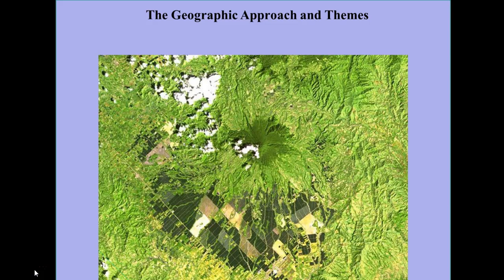We're starting off with an image taken from space that's looking down on the landscape. I would ask the viewers to look at this image and think about what you see. Are there any features that you can identify or figure out what it is that you're looking at? Human features tend to have regular straight lines and geometric shapes, and natural features not so much. You can see this area down here clearly shows human activity, while up in the area to the north, not so much.